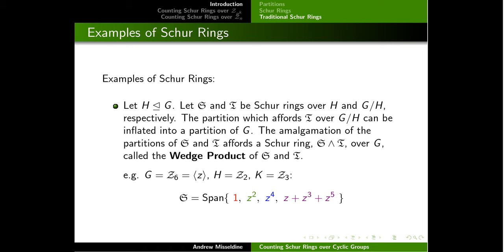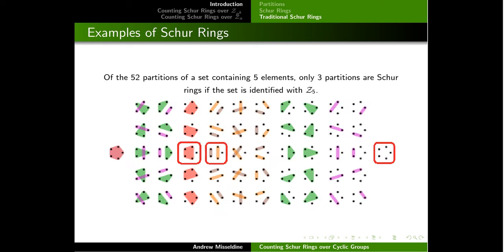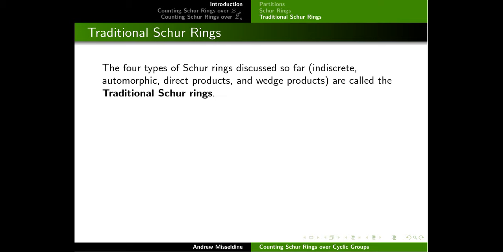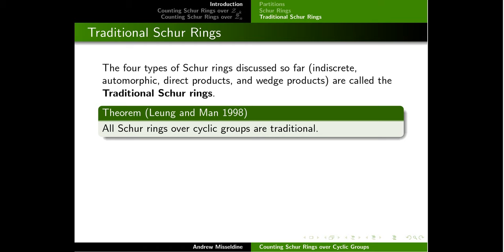As a final example, we can build Schur rings using normal subgroups. If H is a normal subgroup of G, take a Schur ring over H and a Schur ring over G mod H, and it's possible to glue these two Schur rings together to make a Schur ring over G using cosets of the quotient. If we identify our five-point set as the five complex roots of unity, then of those 52 partitions, only three actually correspond to Schur ring partitions: the indiscrete one, the discrete one, and an automorphic one where you identify inverses together. These four types constitute what we call the traditional Schur rings, and it was shown in the 90s by Leung and Man that all Schur rings over cyclic groups are traditional.